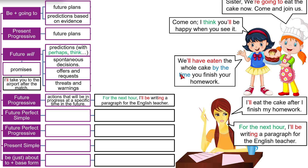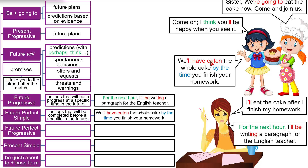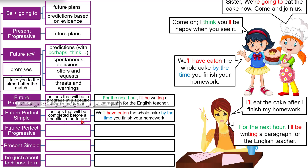"We'll have eaten the whole cake by the time you finish your homework." We have two actions here: eating the cake and finishing the homework. Eating finishes first — so we give it the future perfect simple: use 'will have' plus the past participle. After you finish your homework, you'll find no more cake because we'll have eaten it all. Use future perfect simple for actions that will be completed before a specific time or before another action in the future. The second action gets present simple.